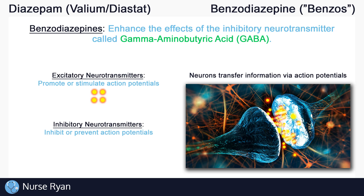Inhibitory neurotransmitters are the opposite — they are kind of like the downers, the ones that slow down or prevent action potentials. The neurotransmitter called GABA is actually the main inhibitory neurotransmitter in the central nervous system, or CNS. So GABA is kind of like the big downer of the nervous system. These little green dots represent GABA. GABA reduces the excitability of neurons, which slows down the transfer of information.